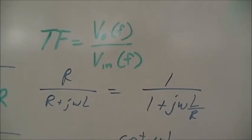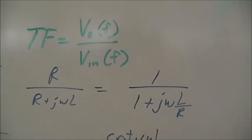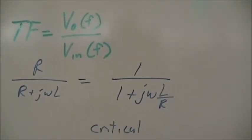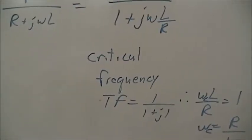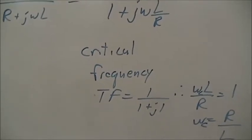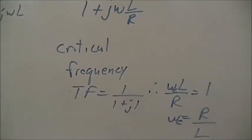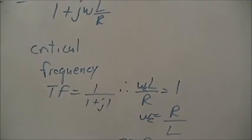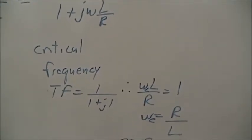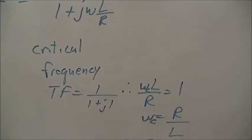Dividing the R value through to get the real term 1, we end up with 1 over 1 plus jωL/R. The critical frequency is defined when the transfer function is 1 over 1 plus j1. Therefore, that means ωL over R must be equal to 1, so the reactance of the inductor and the resistance are the same.